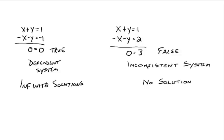This idea carries over to the substitution method as well — if all the letters disappear, you're left with either a true or false statement, determining whether you have a dependent or inconsistent system. In this video, I want to focus on the dependent system. We know there are an infinite number of solutions, so now we can write what the form of all those ordered pairs would be.